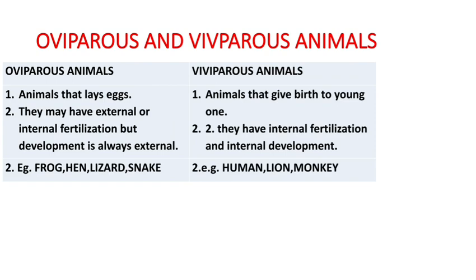There are two more concepts: oviparous and viviparous animals. Ova means egg — so egg-laying animals are called oviparous. Animals that directly give birth to young ones are called viviparous. Among oviparous animals: fish are oviparous, amphibians (frogs) are oviparous, reptiles are oviparous (like snakes), and birds are oviparous. In oviparous animals, fertilization can be external or internal — external in frogs, internal in birds — but development is always external.